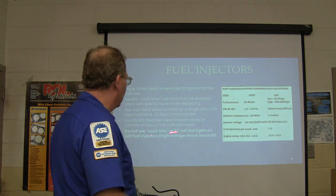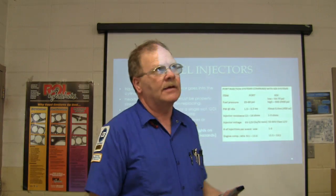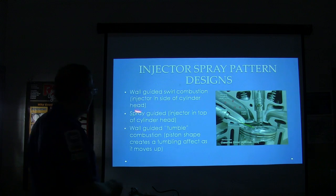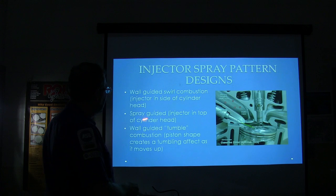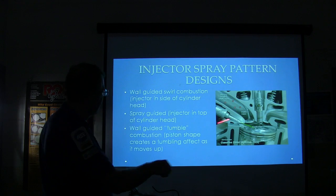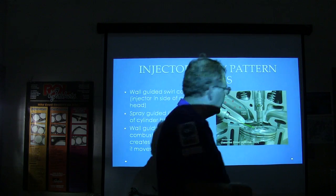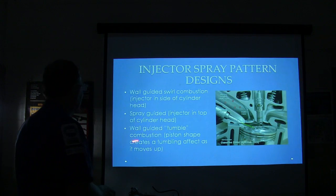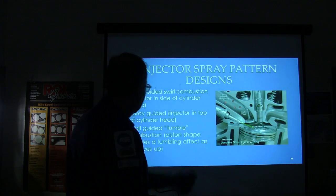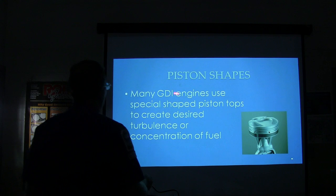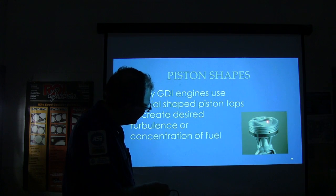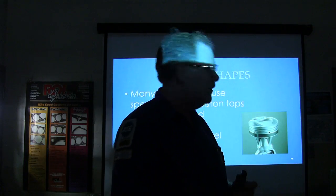Do not use a noid light or 12-volt test light to test GDI fuel injectors. Injector spray designs include wall-guided swirl and spray-guided configurations. In wall-guided designs, the injector enters from the combustion chamber side of the cylinder head, spraying directly into the cylinder — not behind the valves. In spray-guided designs, the injector may be centrally located near the spark plug. During stratified charge operation, combustion occurs only in a small pocket in the piston bowl near the spark plug.